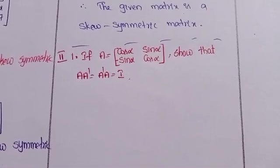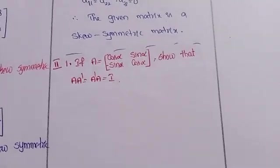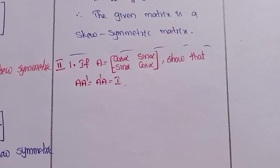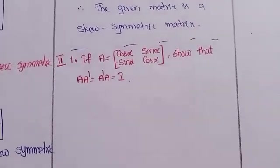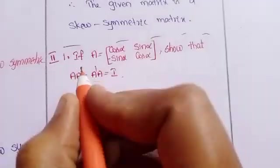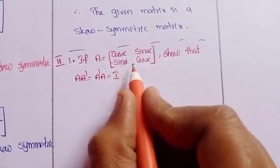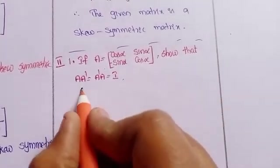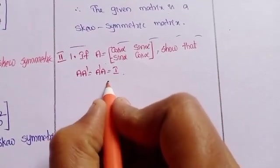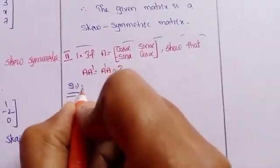Hello everyone, this is Shahin, welcome to my channel. Today we will discuss matrices, intermediate first year, third chapter. Exercise 3C, second roman problems. If A equals cos alpha, sin alpha, minus sin alpha, cos alpha, then show that A into A transpose equals A transpose into A equals I.